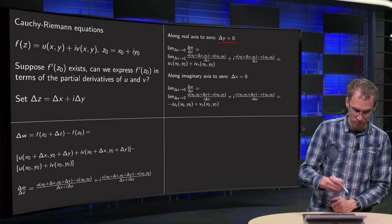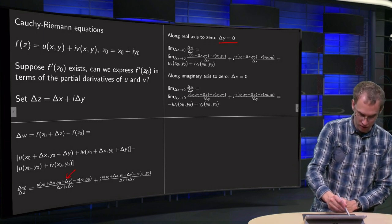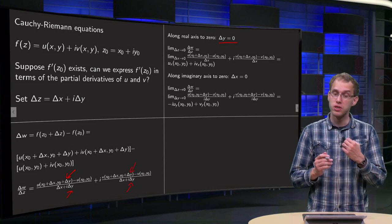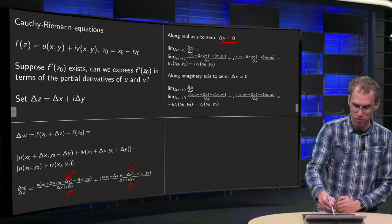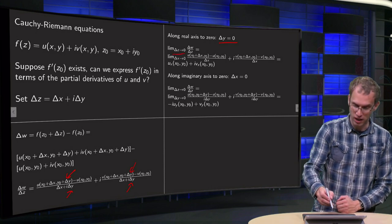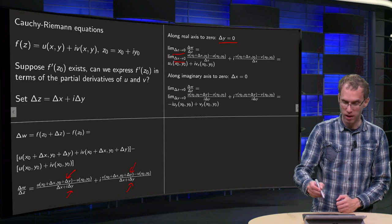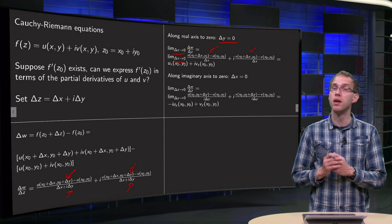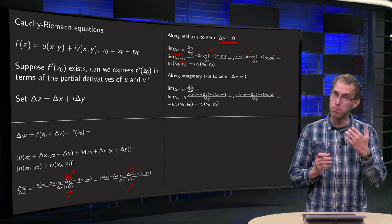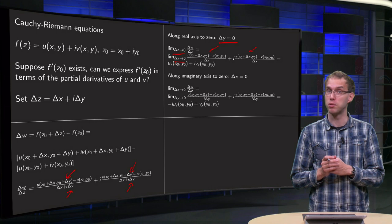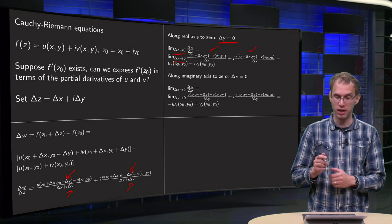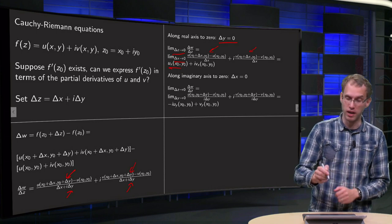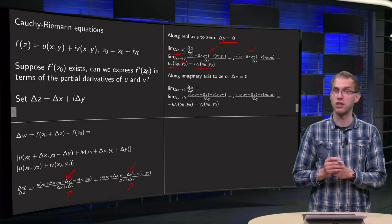If we take Δy to 0, that means that the Δy's over here and over here, over here and over here, they are all 0. So then limit Δz to 0 of Δw over Δz becomes Δx to 0 and we are left with those expressions over here. But you recognize those, those are just the partial derivatives of u with respect to x and v with respect to x. So what you get is uₓ in the point (x₀, y₀) plus i times vₓ in the point (x₀, y₀).